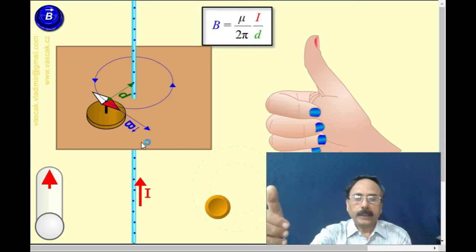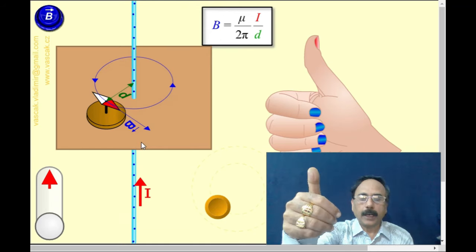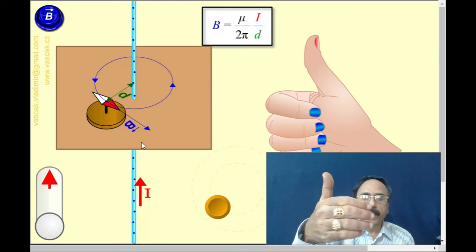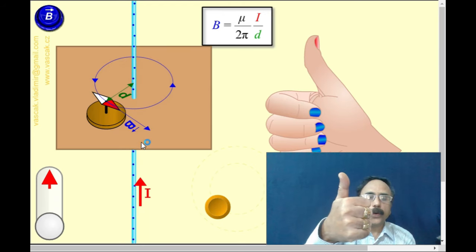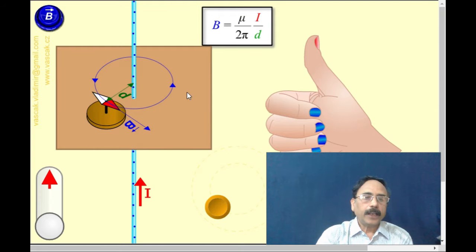we have to keep the thumb in the direction of current, and then the remaining fingers will show the field lines. So here, the field lines are in the counter-clockwise direction when the current is in the upward direction.